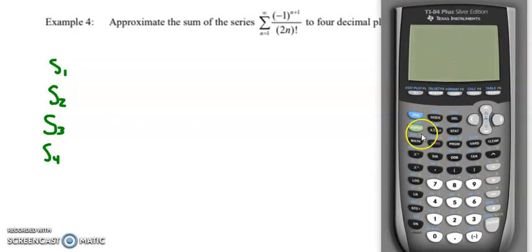I'm going to come over here to the home screen, and I'm going to do alpha F2 and then choose 2 for summation. And I'm going to sum from where x equals 1, and the first sum I'll take is just the sum of the first term, so from 1 to 1. Then here I'm going to type in my series. So I have negative 1 in parentheses raised to the x plus 1, and then all divided by in parentheses 2x closed parentheses.